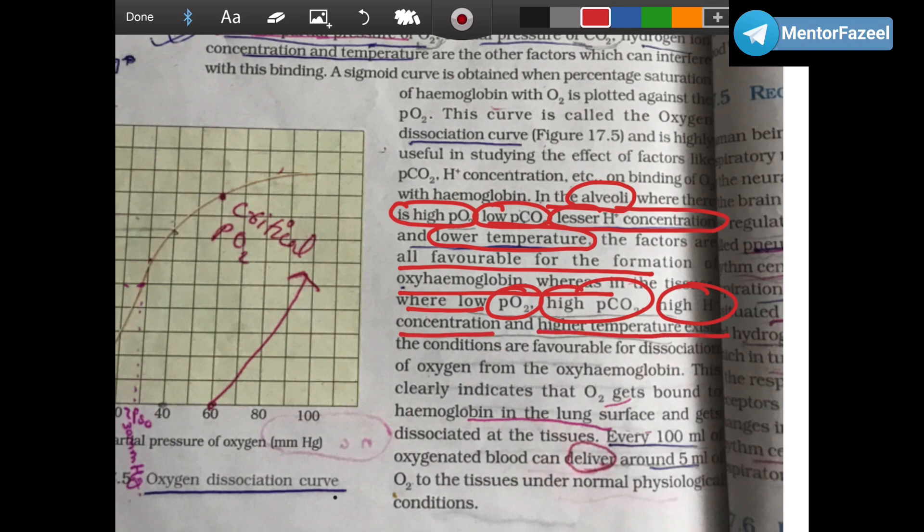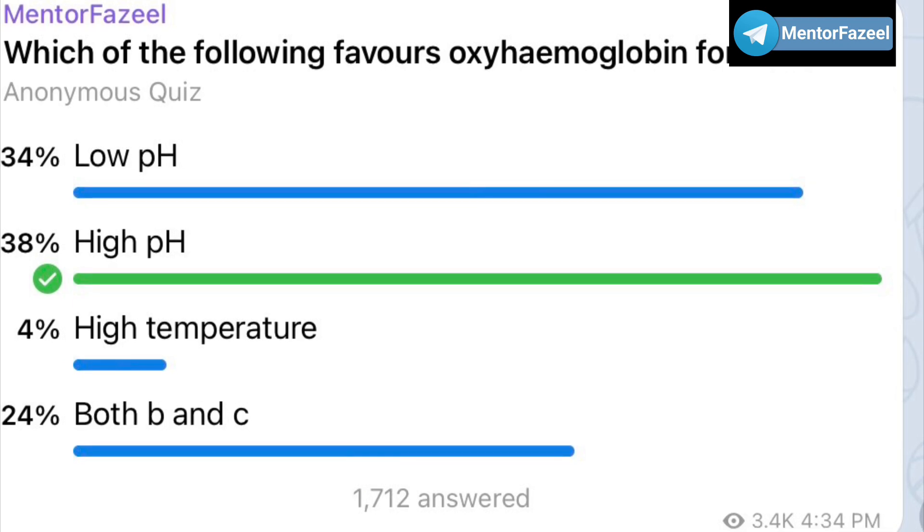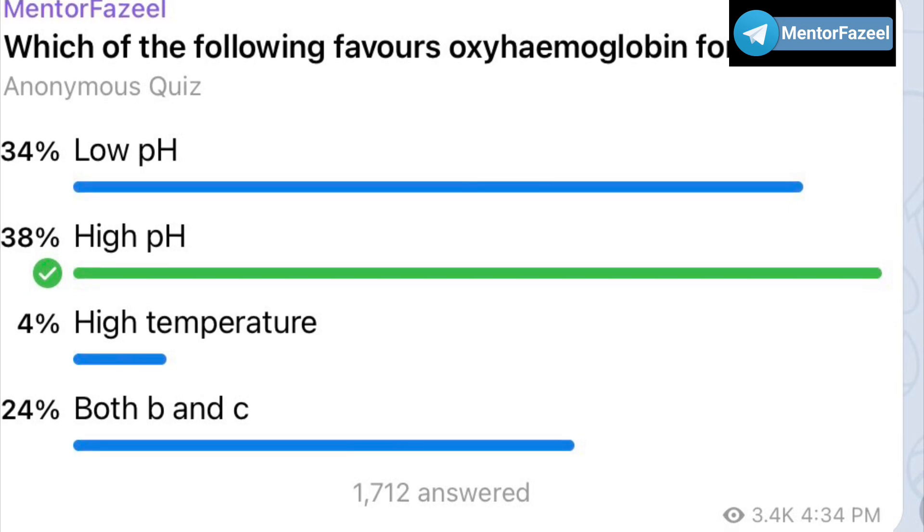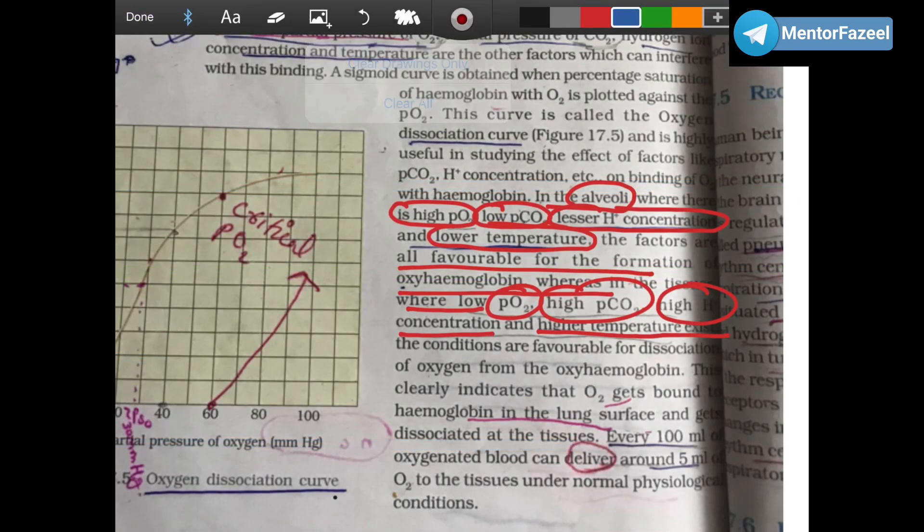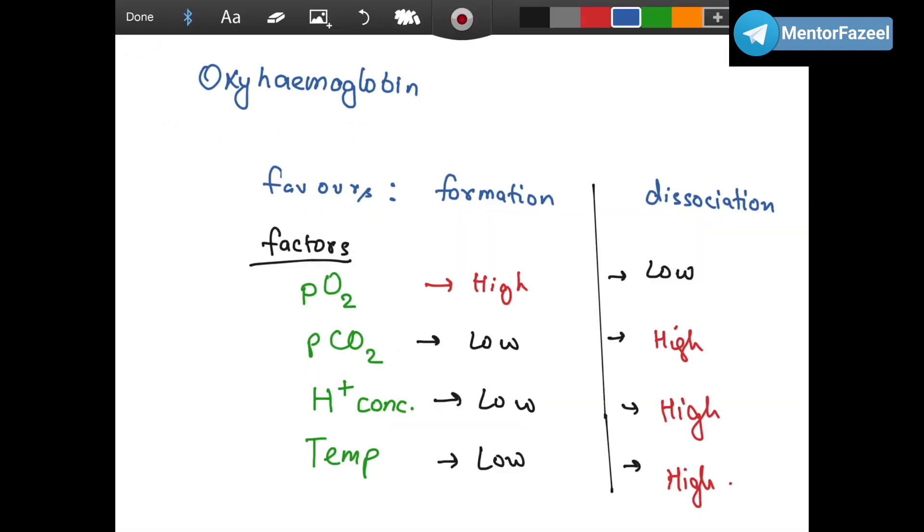Whereas in tissue, low pO2, high pCO2, high hydrogen ion concentration and higher temperature exist, and these conditions are favorable for dissociation. And the question was framed only from these things. The only difference was that the term lesser H+ ion concentration was replaced with high pH.